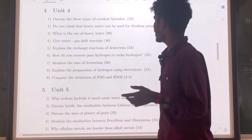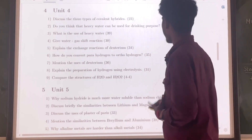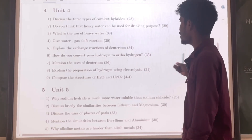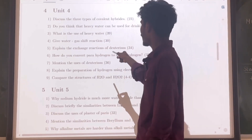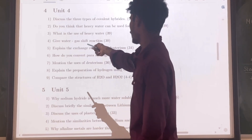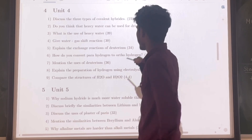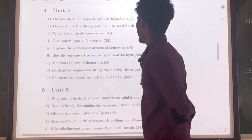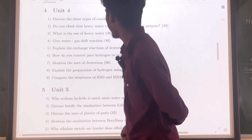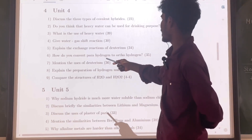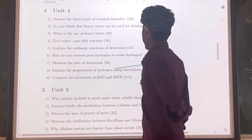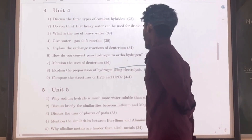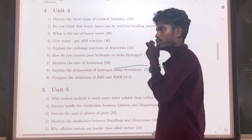Unit 4. Question number 23: Discuss the three types of covalent hybrids. Question number 29: Can heavy water be used for drinking purposes? Question number 39: What is the use of heavy water? Question number 30: Give the water-gas shift reaction. Question number 34: Explain the exchange reaction of deuterium. Question number 35: How do you convert para hydrogen into ortho hydrogen? — very important. Question number 36. Question number 44: Compare the structure of H₂O and H₂O₂ — very important. Also: explain the preparation of hydrogen using electrolysis, question number 31.